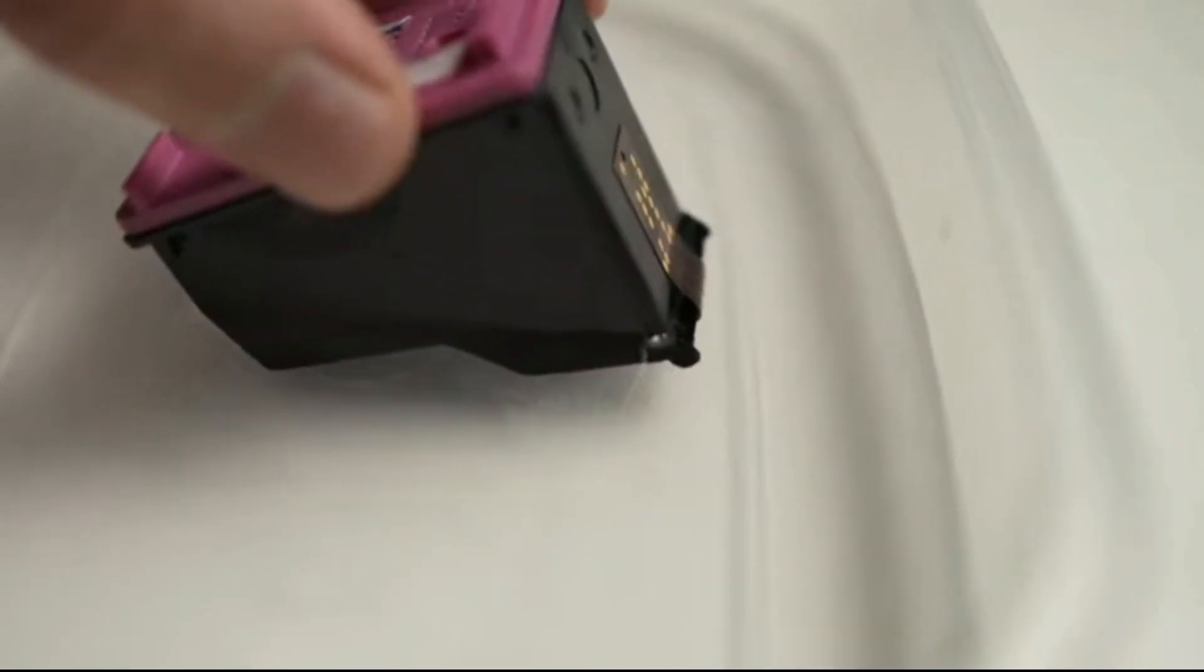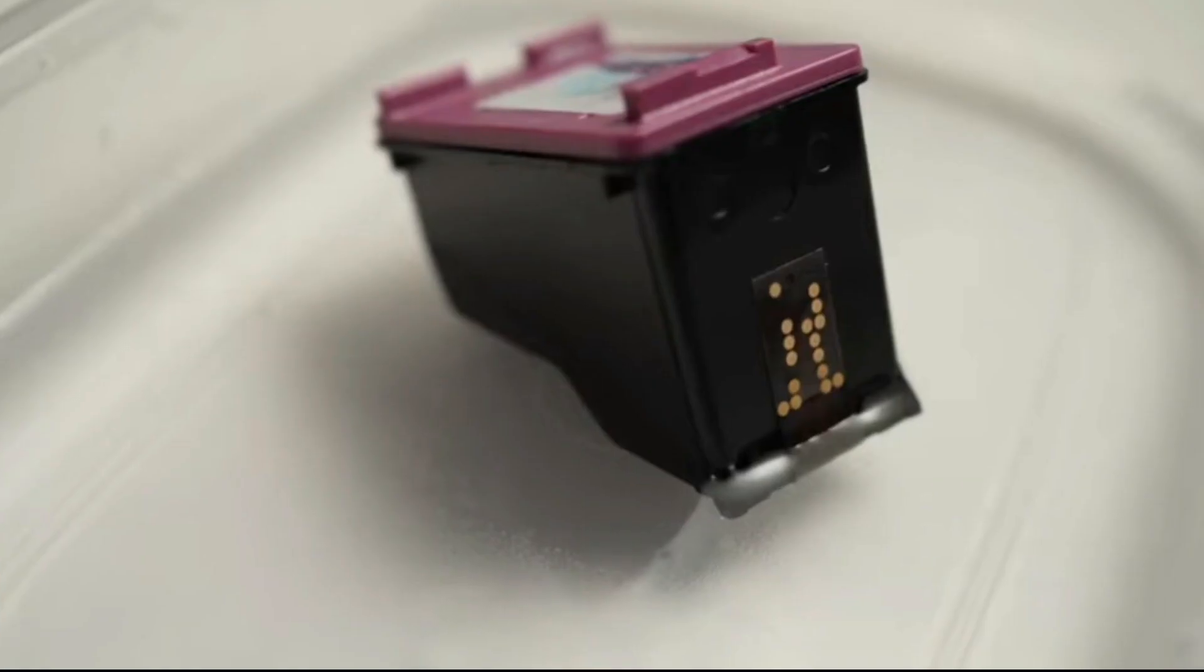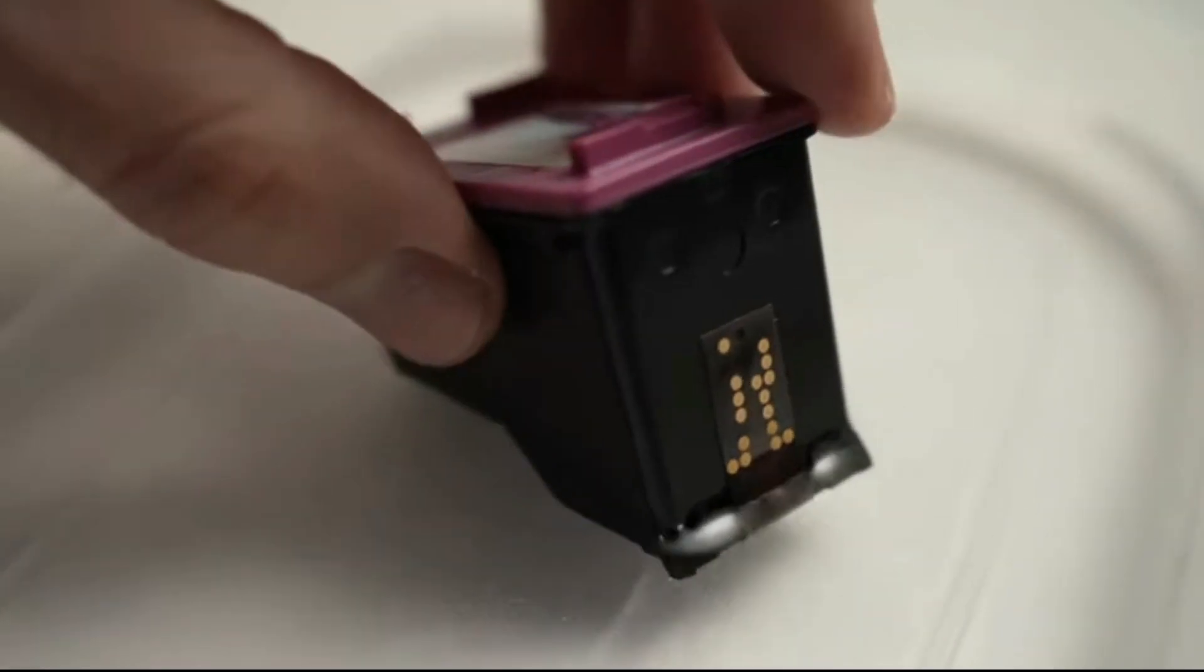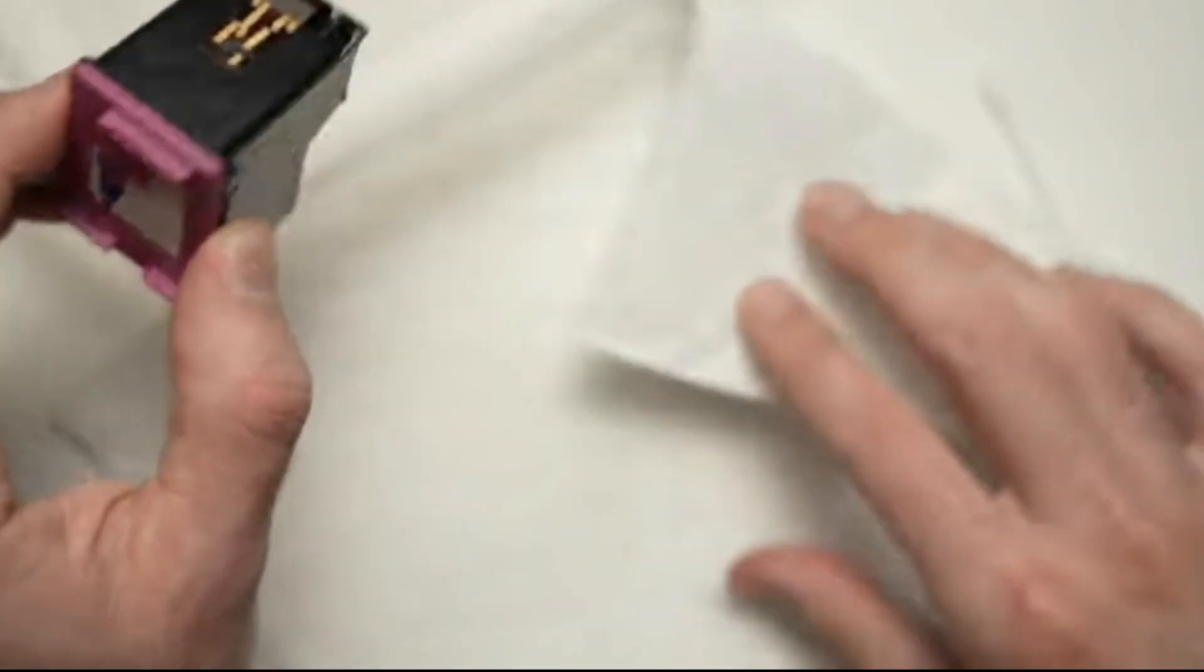Step 5: Hold the ink cartridge by its black or color cap. Remove any dried ink from the cartridge nozzle with a damp cloth or tissue.